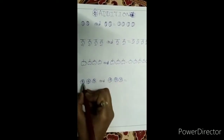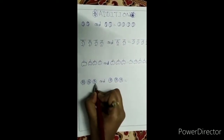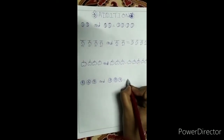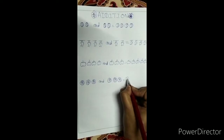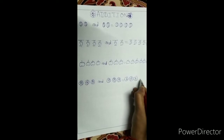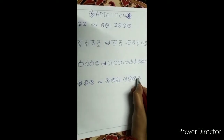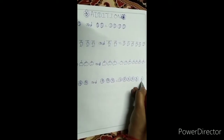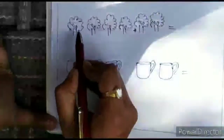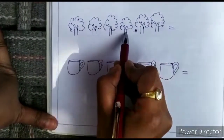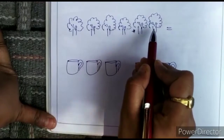Next. One, two, three, and four, five, six. Six flowers. One, two, three, four, five, six. One, two, three, four, five, six.